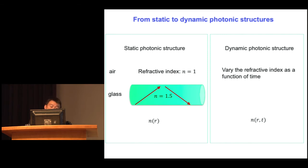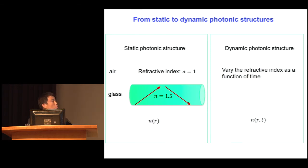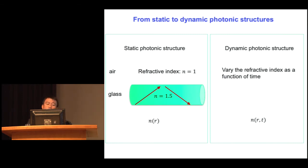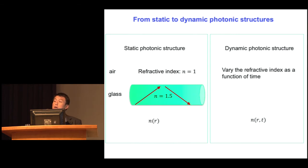The realization is that the vast majority of structures people have considered are what's called static photonic structures — structures where the refractive index distribution does not change as a function of time. On the other hand, you can get fascinating new physics, including the effective magnetic field, if instead you allow the material property of the refractive index to vary as a function of time.